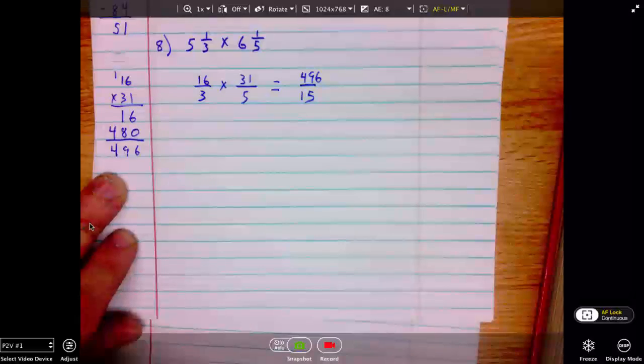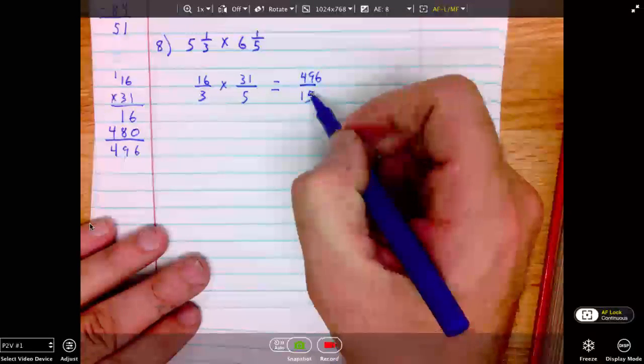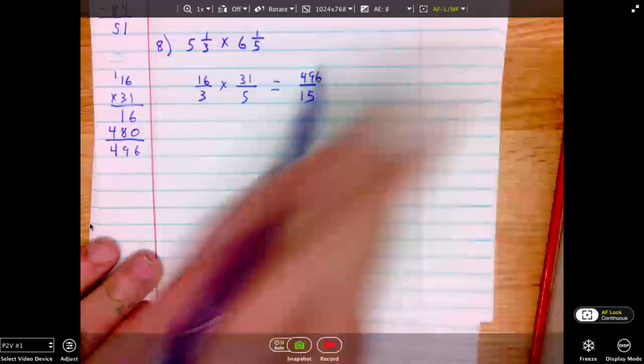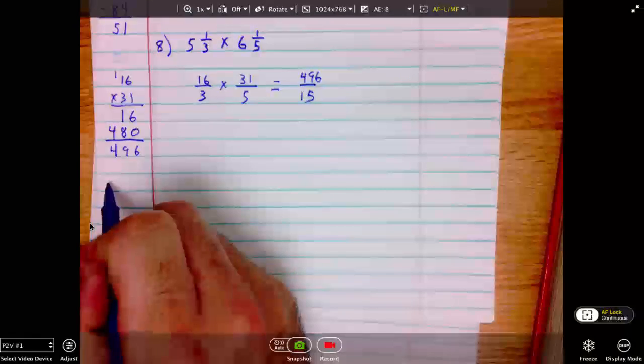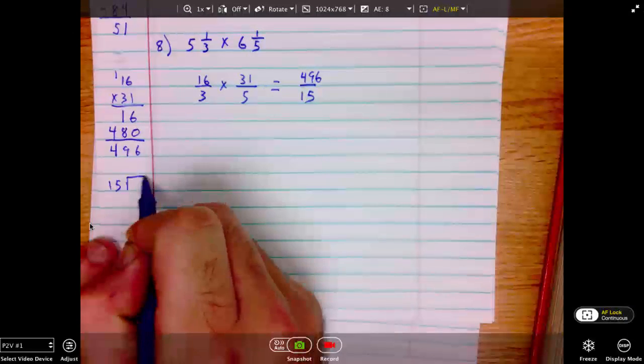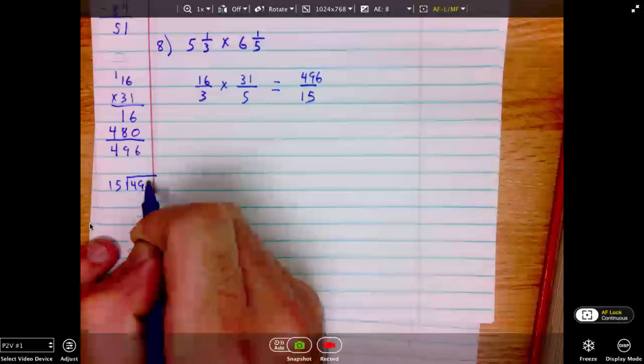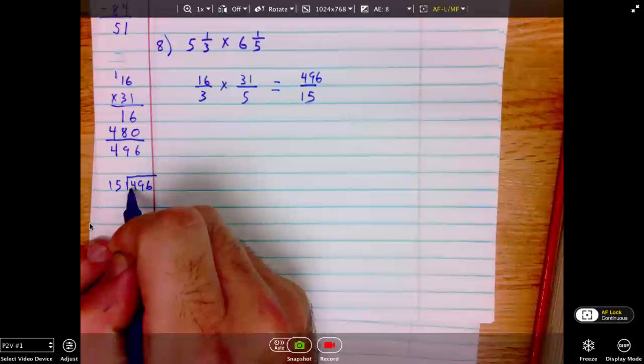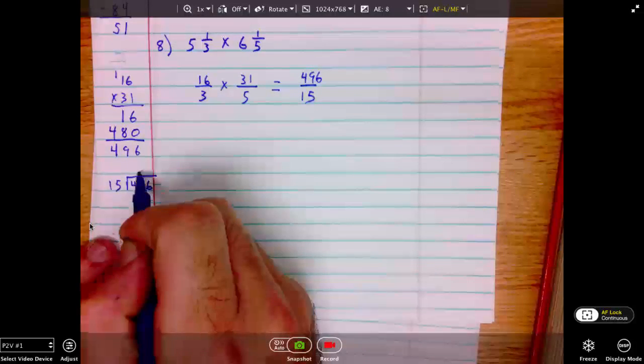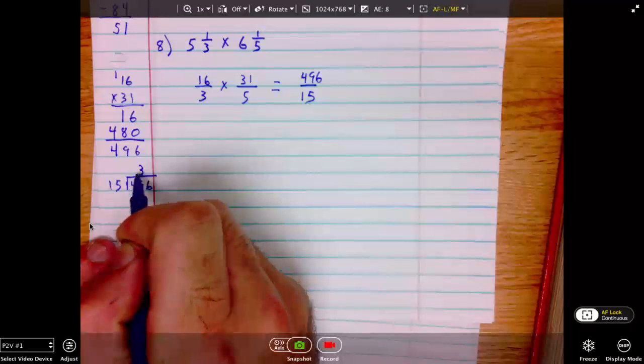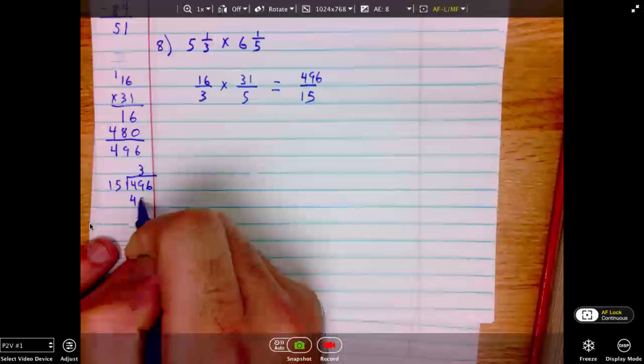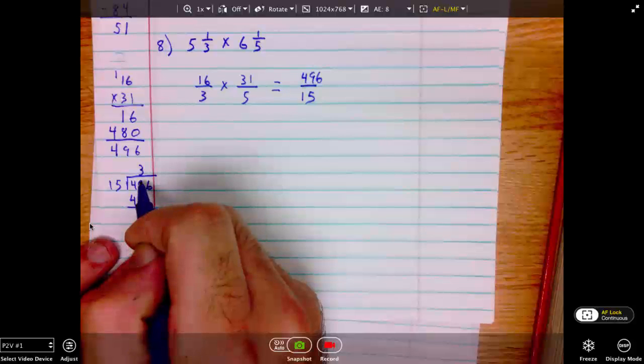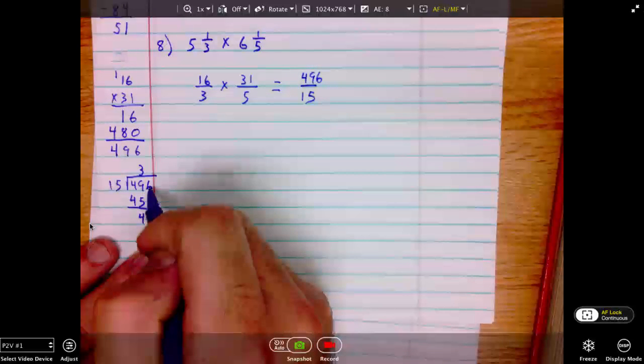Now we should reduce. 15 will go into 496 how many times? Back to our scratch paper. 15 into 496. 15 will not go into 4, but 15 will go into 49 3 times. 3 times 15 is 45. Subtracting, 9 minus 5 is 4. Bringing down the 6.